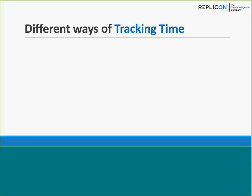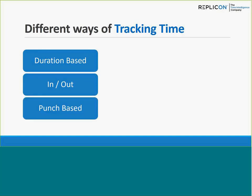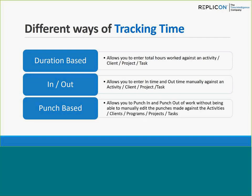There are different ways you can use Replicon to track time. The first is duration-based, then we have the in and out method, and there's a punch-based method. With duration-based, you enter the total hours worked against an activity, client, project, or task, depending on the modules you've purchased. In and out allows you to enter in time and out time manually on the timesheet, and you can put in time against activities, clients, or projects. The punch-based method allows you to punch in and out of work without being able to manually edit those punches, and they can be made against activities, clients, programs, projects, or tasks.